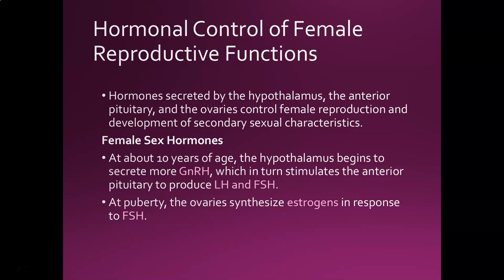The hormones are really going to be the target of birth control, so understanding how they work in a normal cycle is important. Hormones are secreted by three different glands: the hypothalamus, the anterior pituitary, and the ovaries themselves. All of them control female reproduction and also the development of secondary sexual characteristics — for women, that's the development of the breasts, the rounding of the hips, and all the soft curves. Around 10 years of age the hypothalamus begins to secrete more GnRH — gonadotropin-releasing hormone.